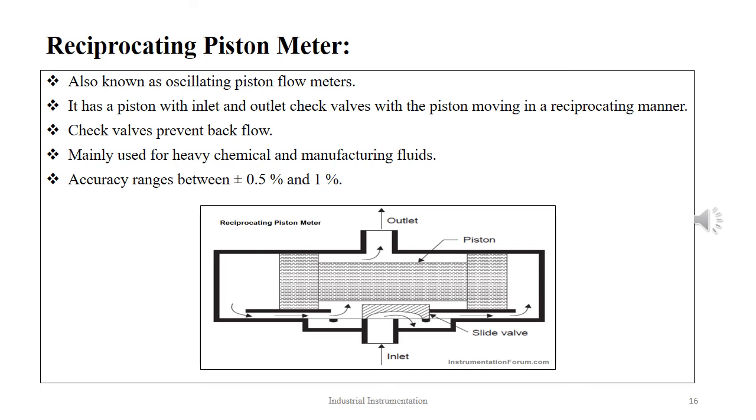As piston retracts from cylinder, fluid is filled in. As piston re-enters, the fluid is forcefully ejected out of the cylinder. It has a very high temperature sustenance capability of 540 degrees Celsius and can handle 100,000 PSIG pressure. These are mainly used for heavy chemicals and manufacturing fluids. They offer accuracy of the range of ±0.5 to 1%.